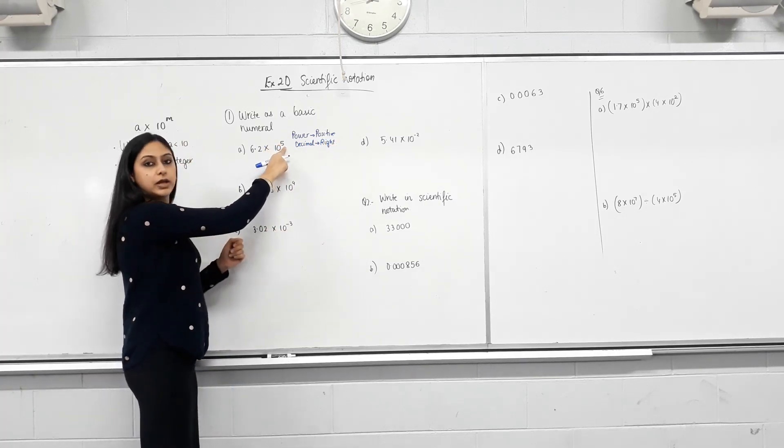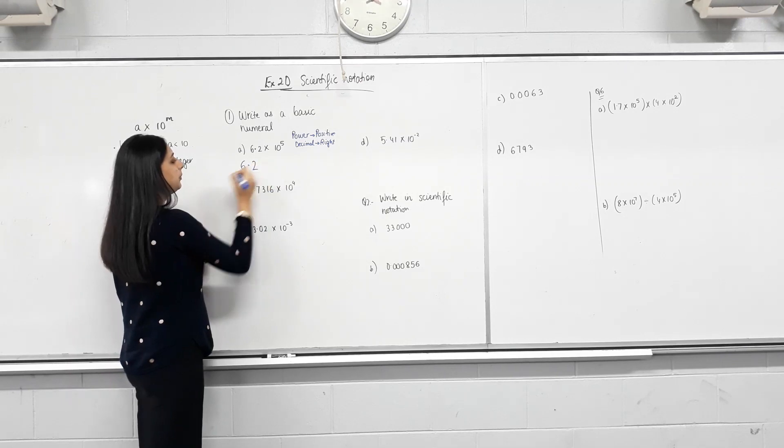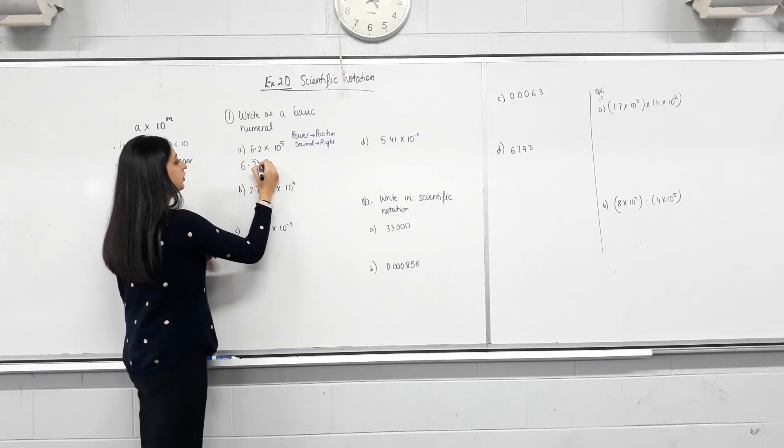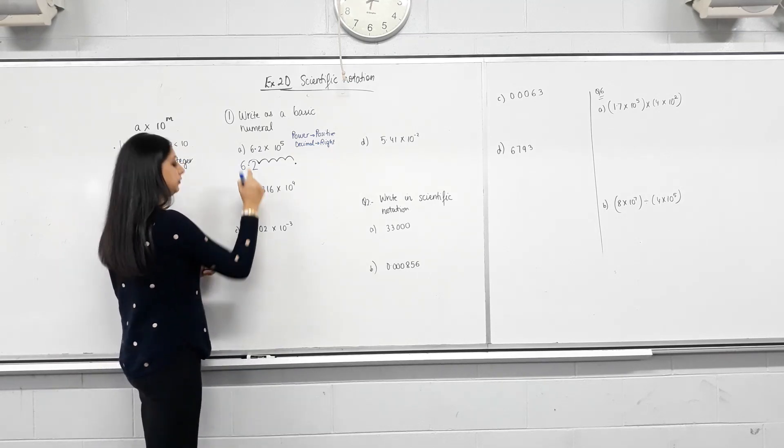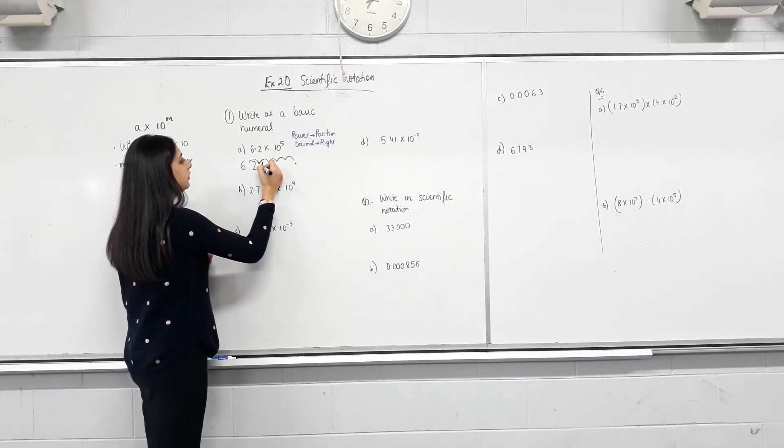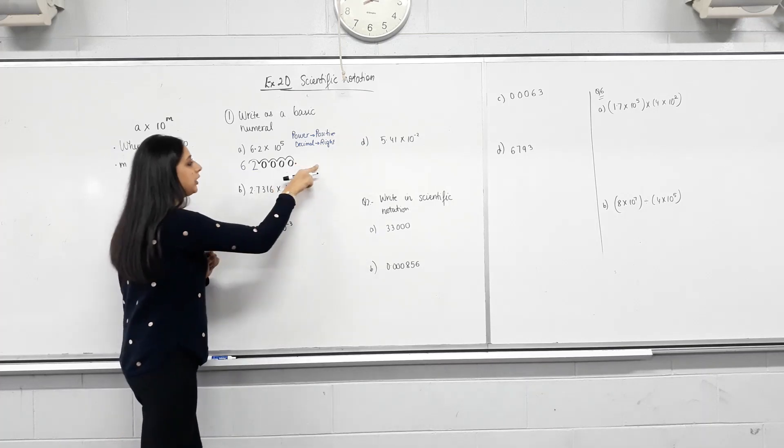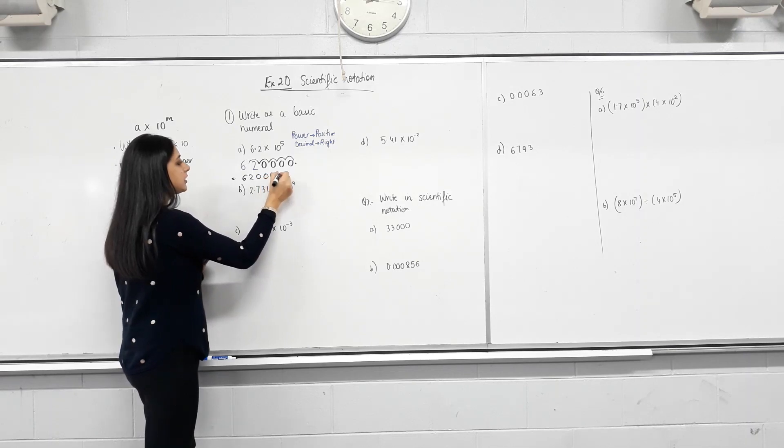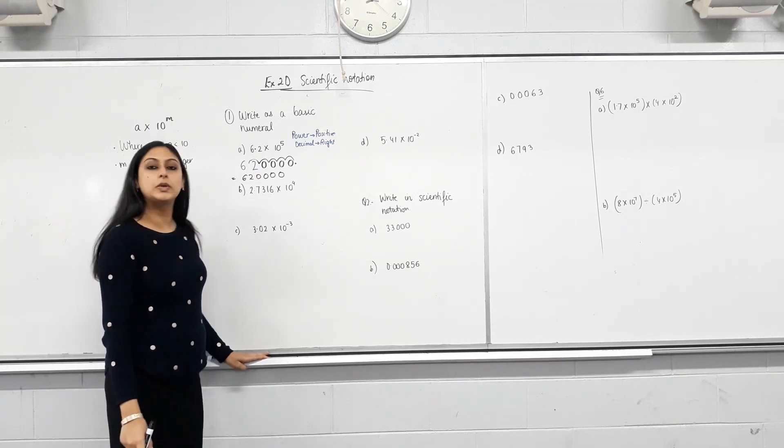How many places do I need to move it? Five. Okay, so isn't the decimal point here? So it's 6.2, but I need to move it five places to the right. So one, two, three, four, five. So that means the decimal comes here. What do I fill the gaps with? Zero. Exactly. So get rid of this decimal. And that is your new number. But because there's no numbers after this, do I need to write the decimal? No. So this is your answer.